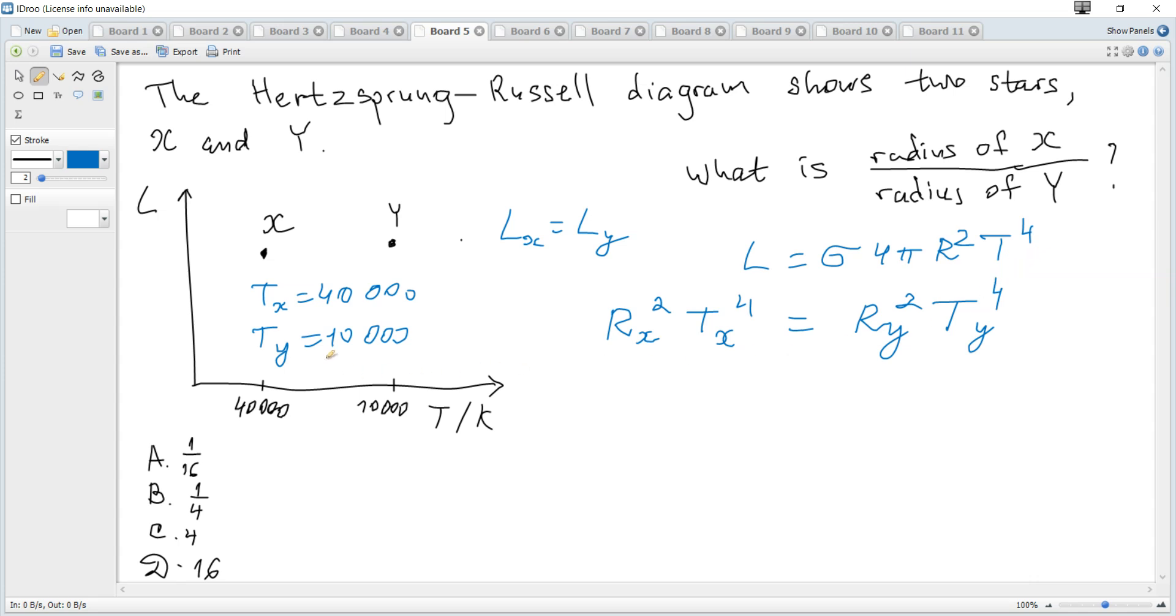Let's do the ratio: radius of X over radius of Y. We can take square root on both sides to get RxTx² equals RyTy². Then Rx over Ry equals Ty over Tx squared.